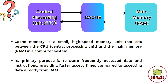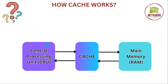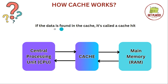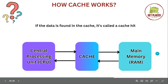Now let's see how it works. When the CPU needs to read or write data, or if it needs to access any file, it first checks if the data is present in the cache memory. If the data is found in the cache, it is known as a cache hit. In the case of a cache hit, the CPU can access the data directly and quickly from the cache, without needing to go to the main memory RAM.